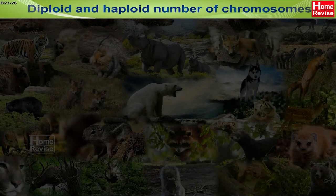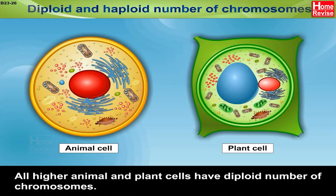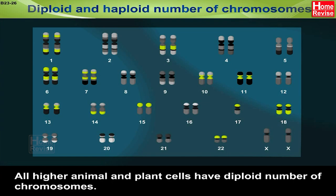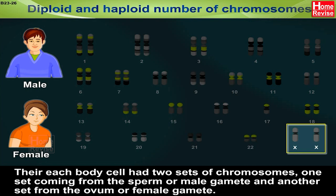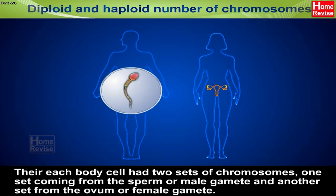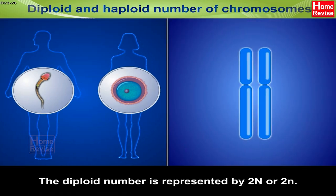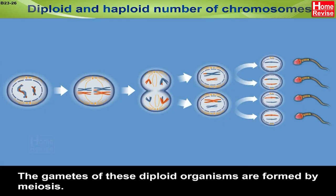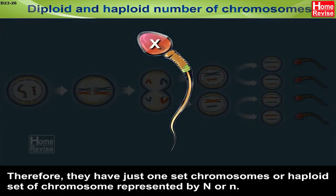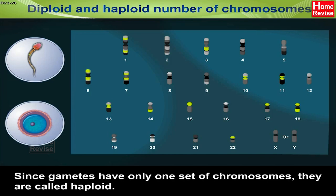Diploid and haploid number of chromosomes: All higher animals and plant cells have a diploid number of chromosomes. Each body cell has two sets of chromosomes — one set coming from the sperm or male gamete, and another set from the ovum or female gamete. The diploid number is represented by 2N. The gametes of these diploid organisms are formed by meiosis; therefore, they have just one set of chromosomes, or haploid set, represented by N. Since gametes have only one set of chromosomes, they are called haploid.